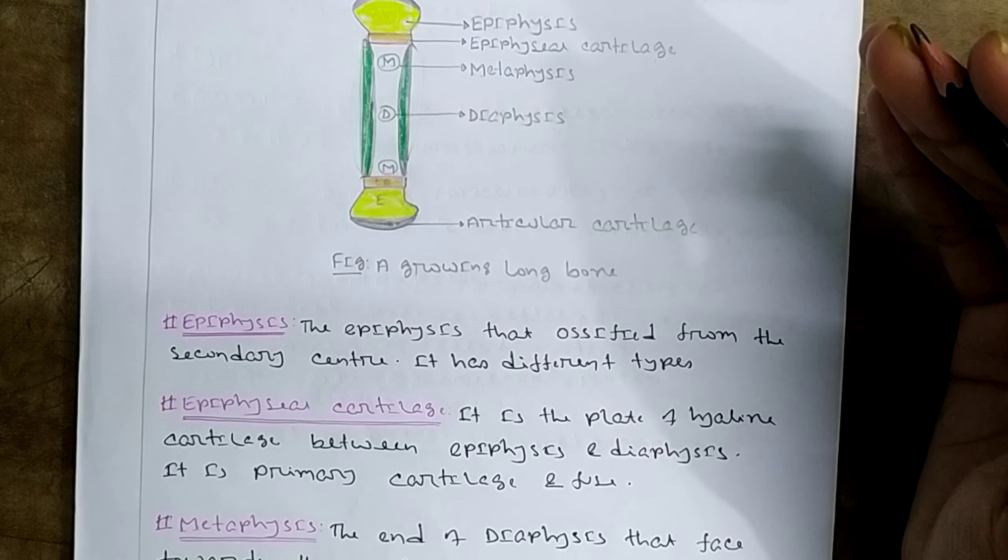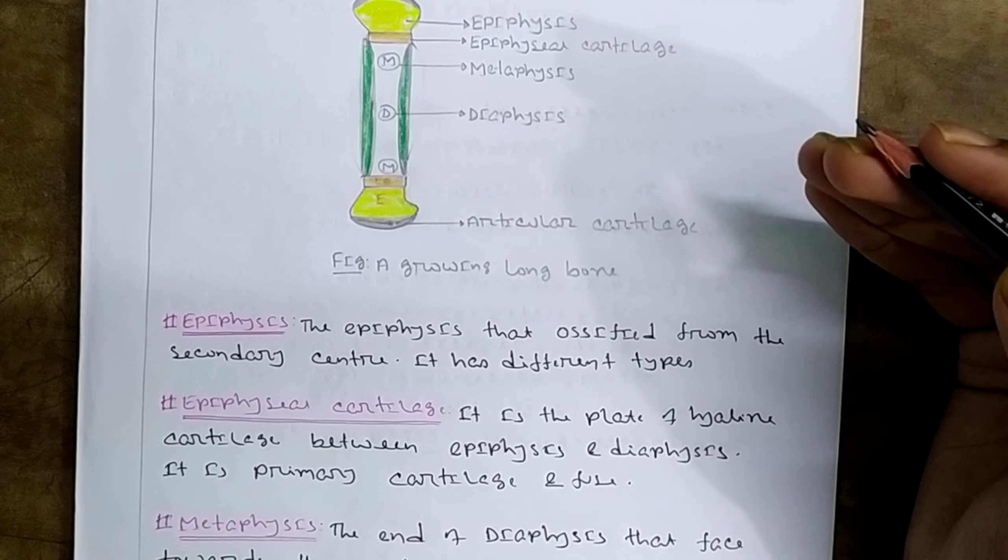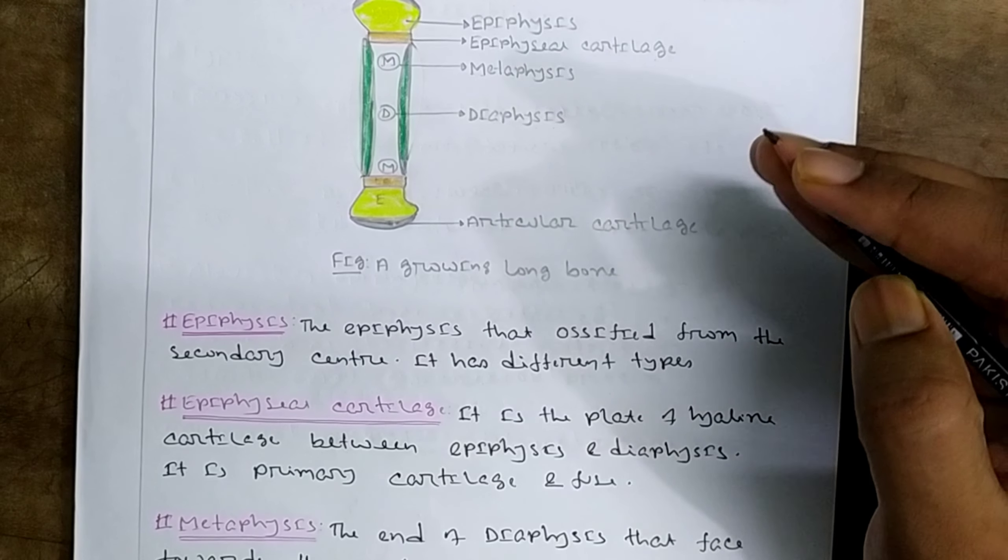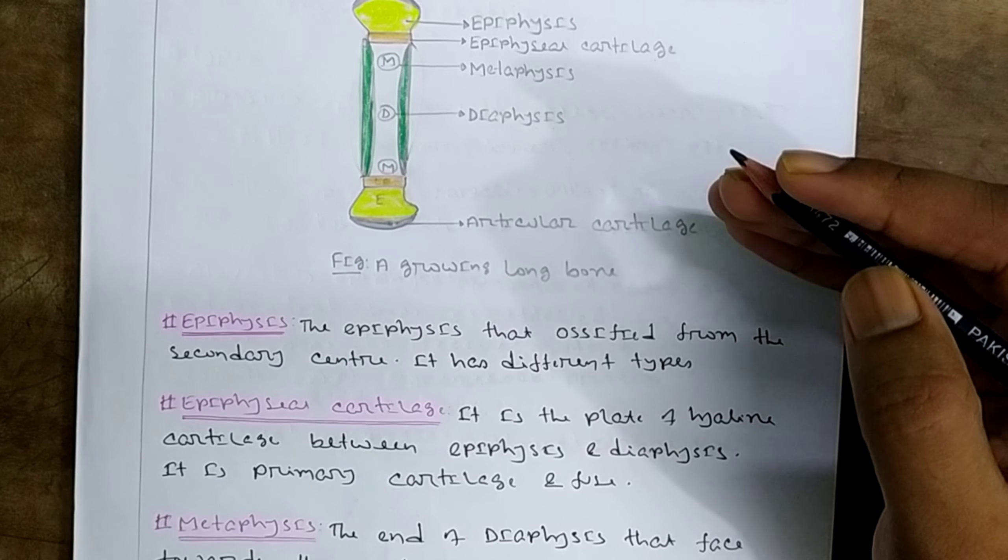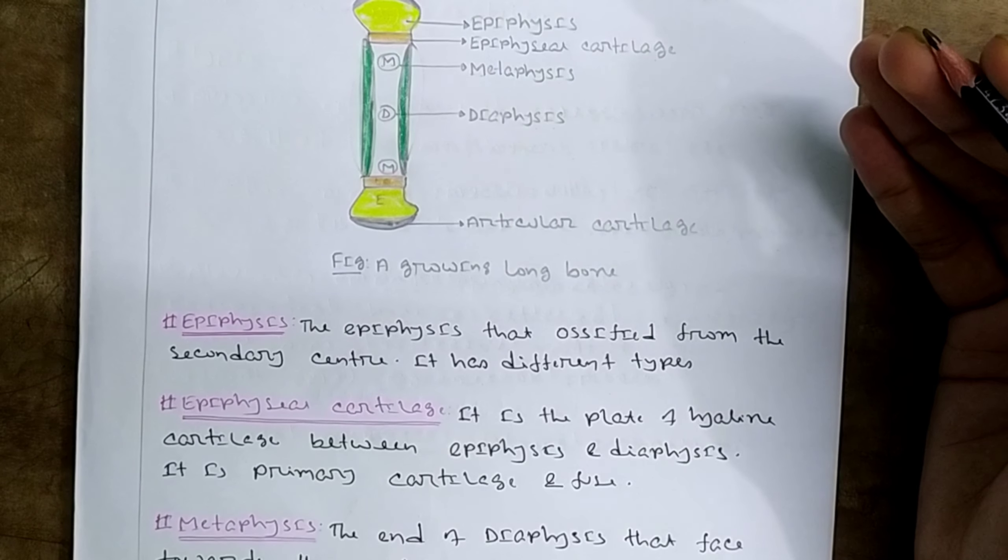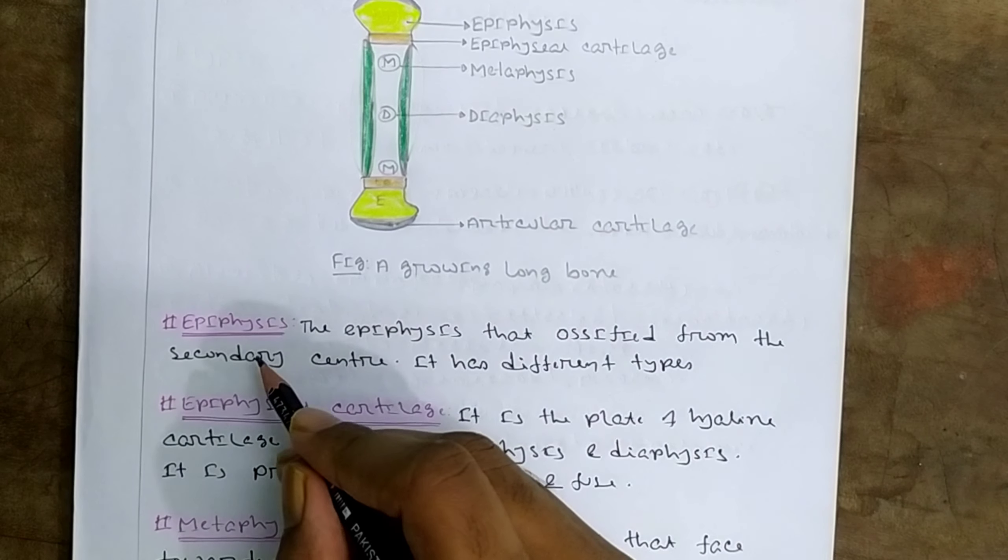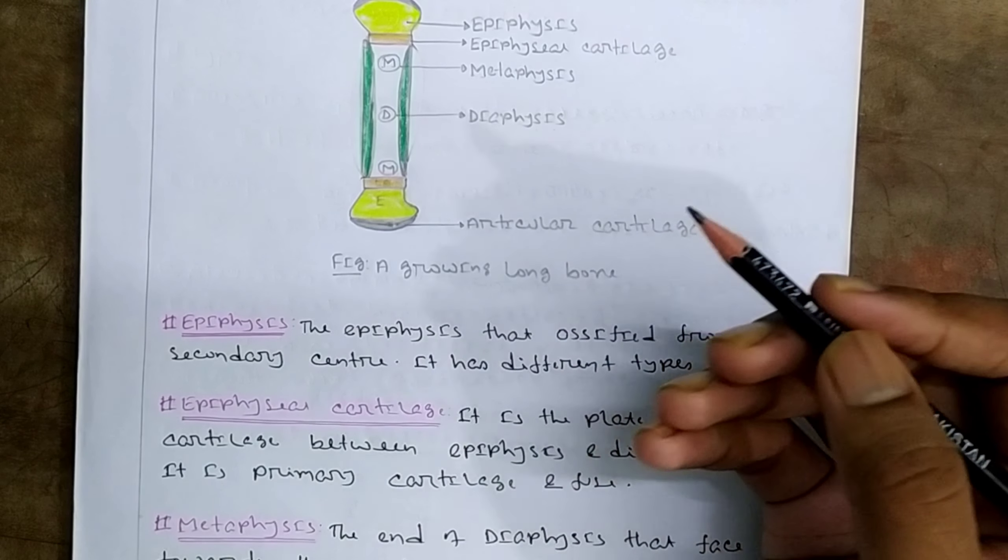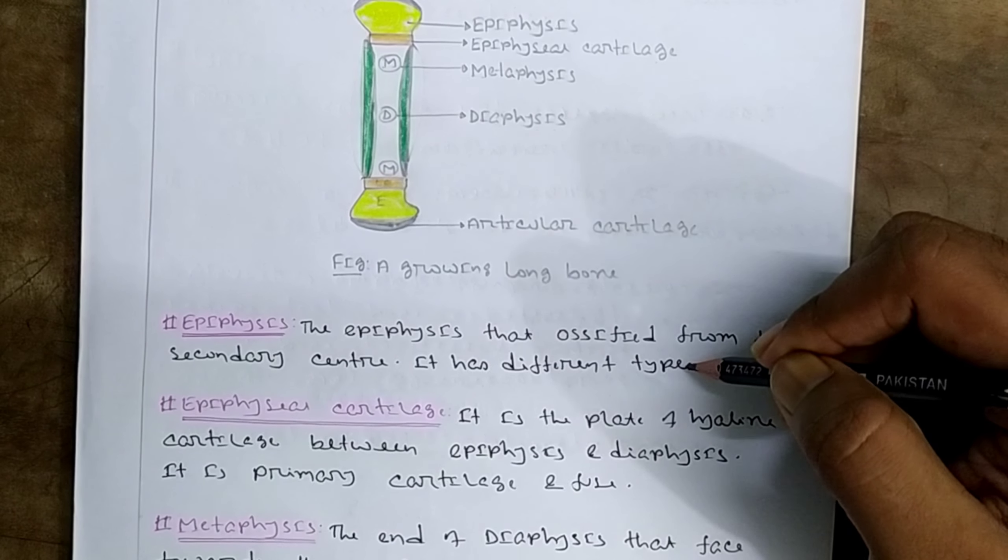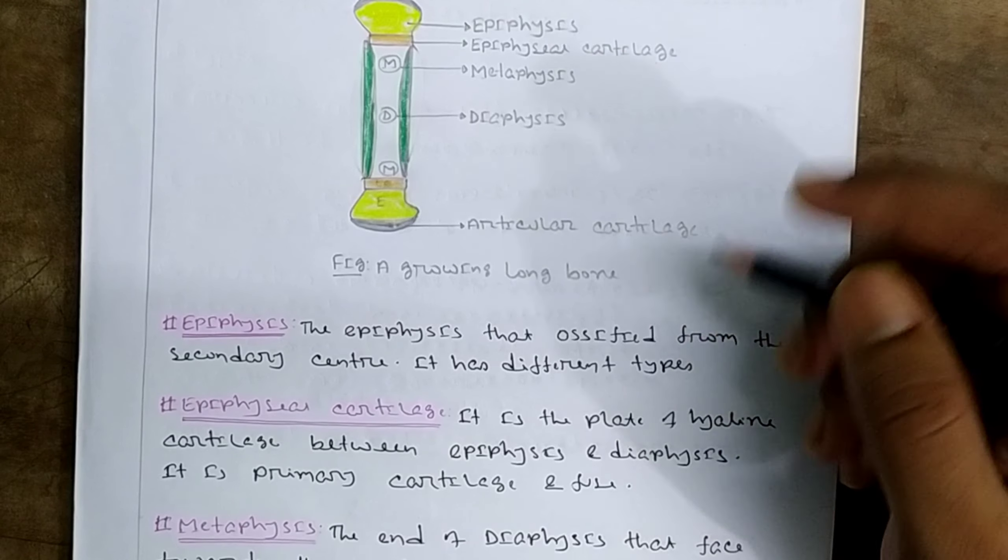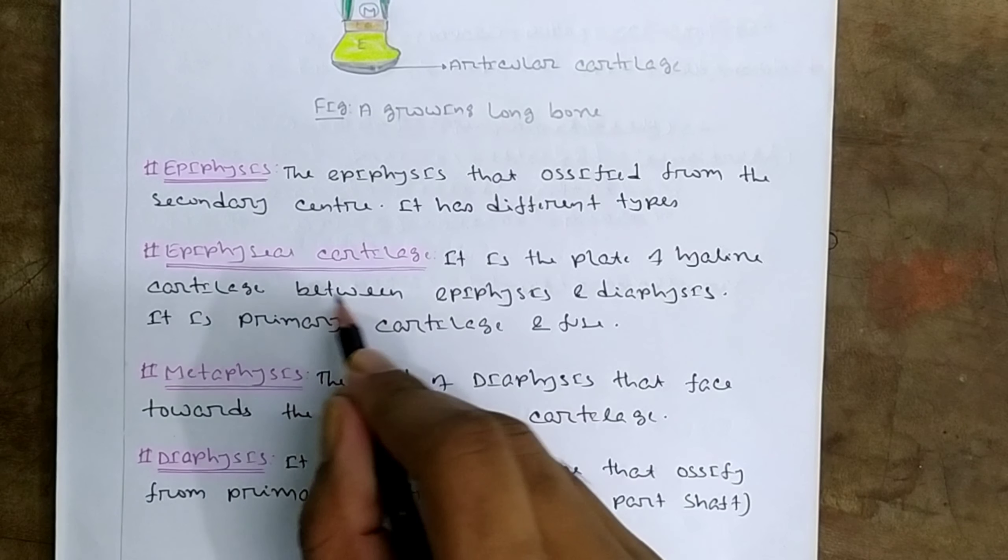The primary center is where formation begins progressively. The secondary center develops later. The epiphyseal cartilage develops between these centers. This is the epiphyseal cartilage.